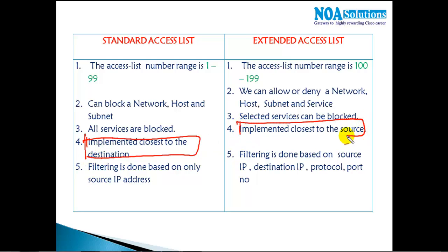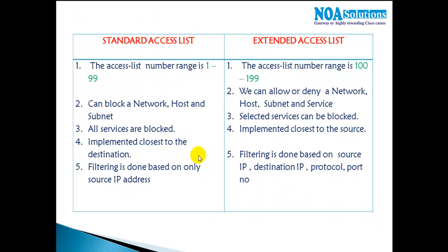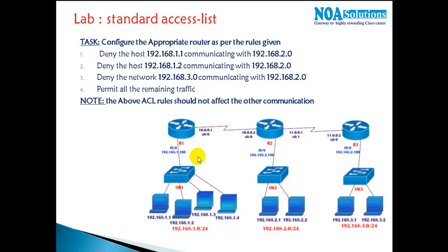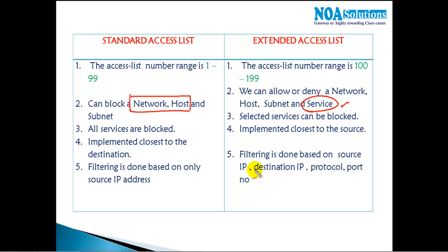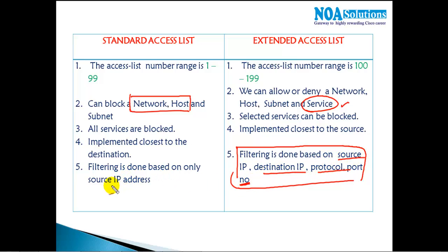There's one more difference: standard ACLs should be implemented closer to the destination, while extended ACLs should be implemented closer to the source. This will become clearer during lab implementation. To summarize: both standard and extended ACLs can allow or deny specific hosts, networks, or subnets, but extended ACLs add service-level filtering, support source/destination/protocol/port filtering, while standard ACLs only check the source address.